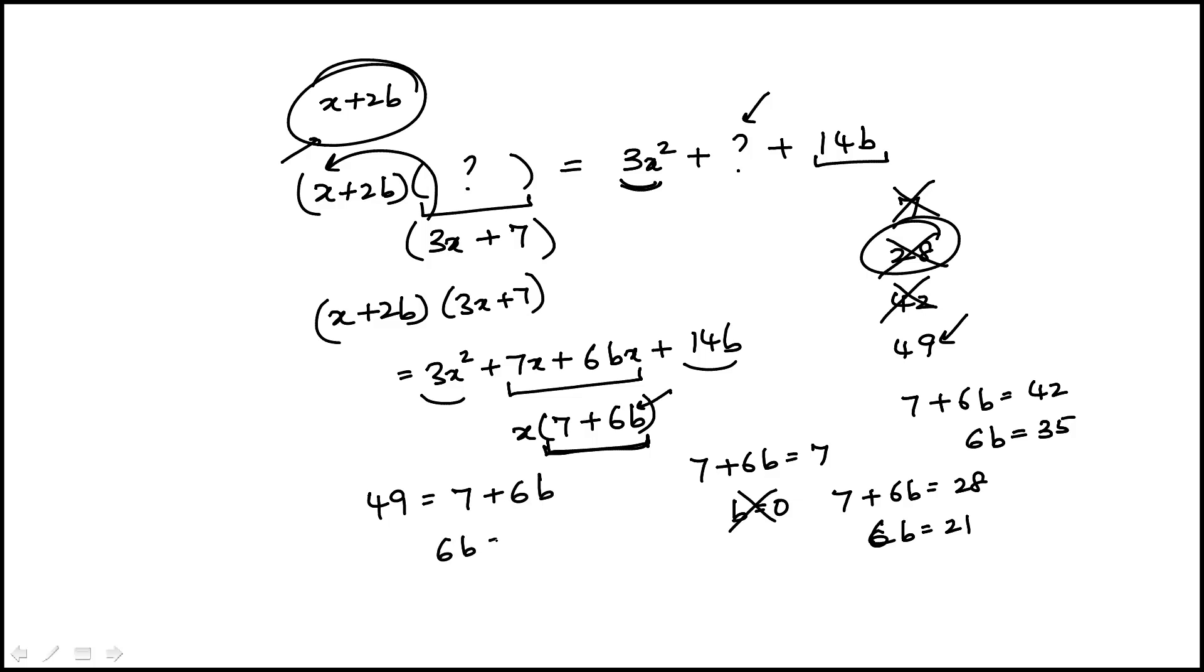And you will see 6b is 42, and we indeed find b is 7. It's a positive integer. So the answer is choice D.